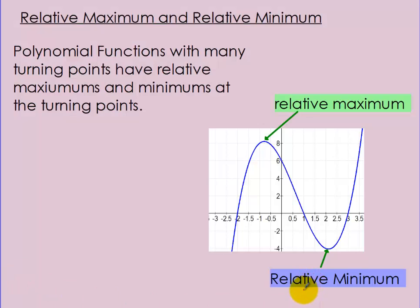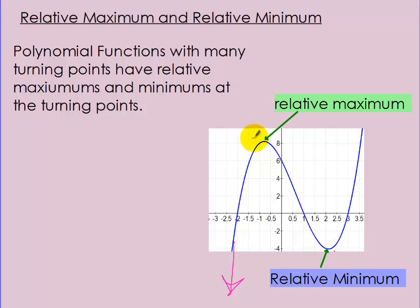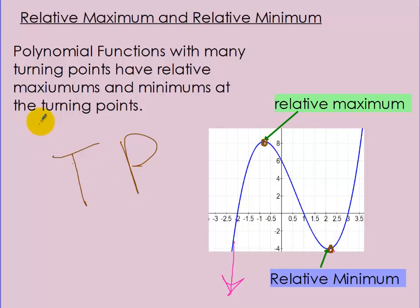Another concept with polynomial functions is relative maximums and minimums. A relative maximum is basically the peaks, and a relative minimum is the valleys — not the maximum or minimum of the whole function (which goes to infinity), but relative to that local area. These are also the turning points from last lesson — where the function goes from increasing to decreasing or vice versa.